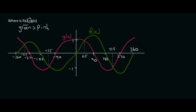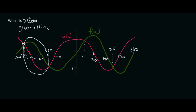They want to know where the green graph is above the pink graph. So let's look at this part over here. Which graph is higher up over there? Well, that's the pink graph, so we're not interested in that. We want to know where the green graph is higher up. In this interval over here, from this point up to this point, the green graph is higher up.